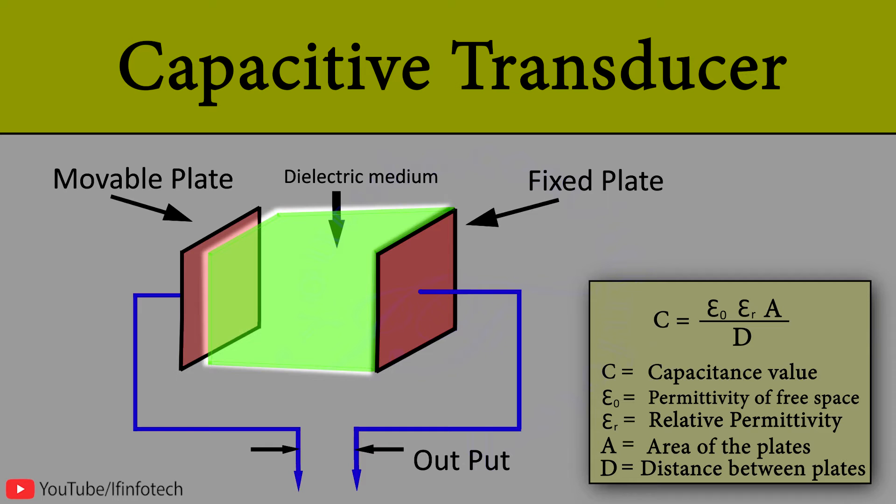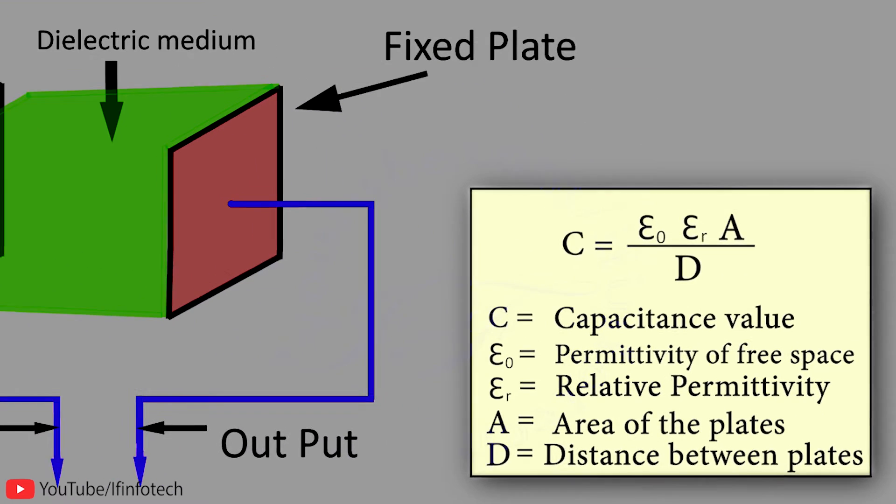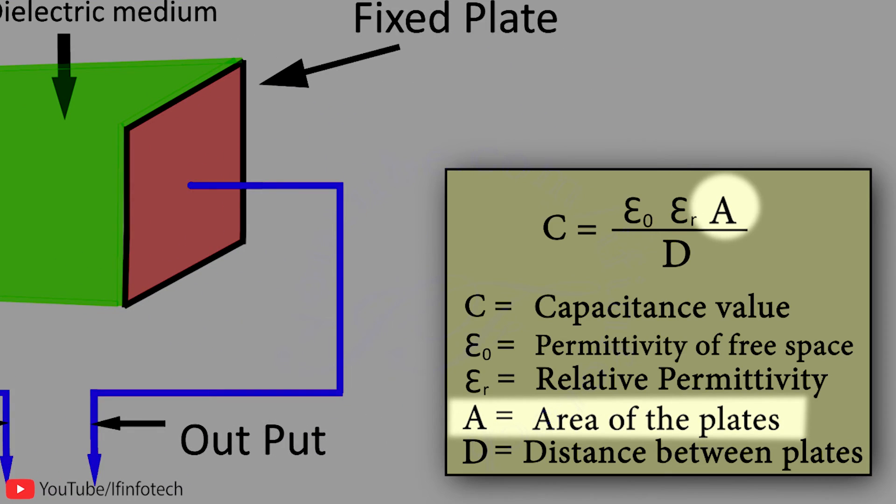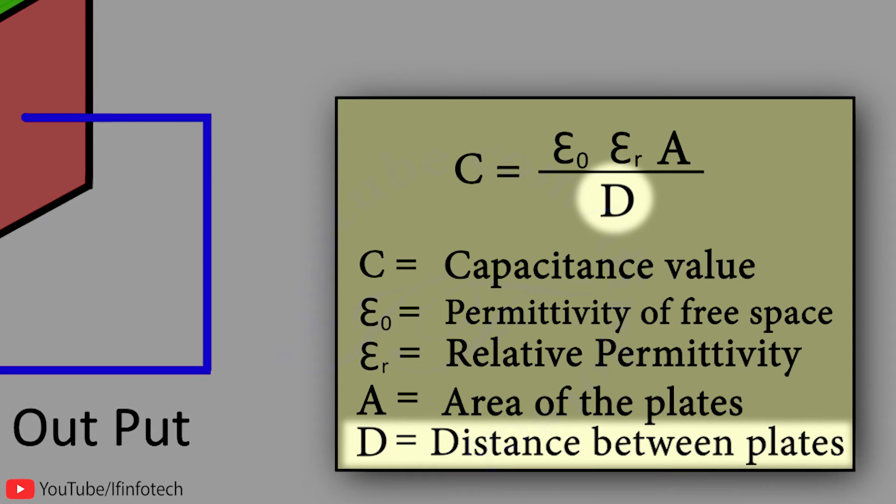Here capacitance value can be measured by this formula. A indicates area of plates and D indicates distance between the plates.